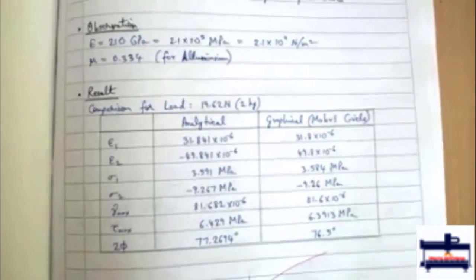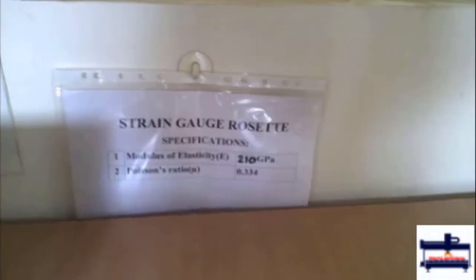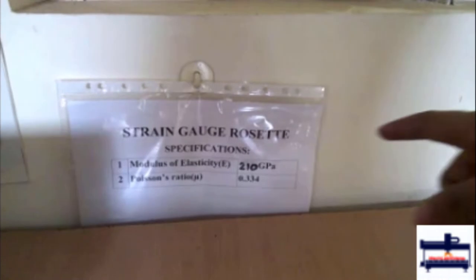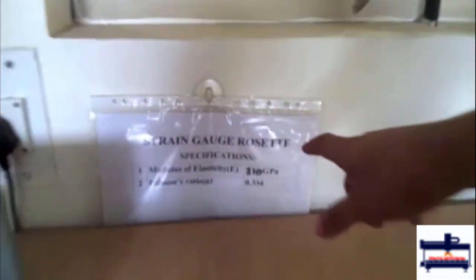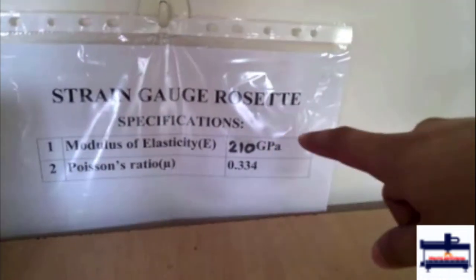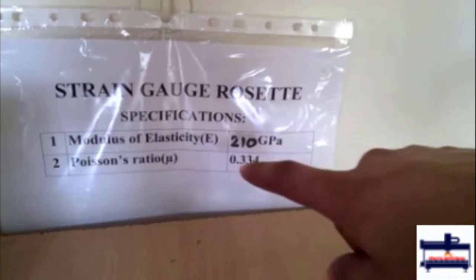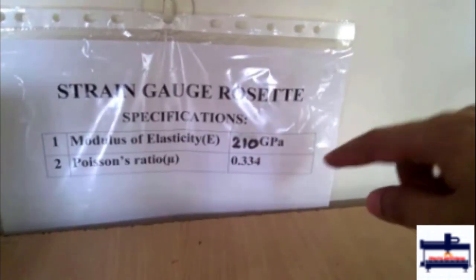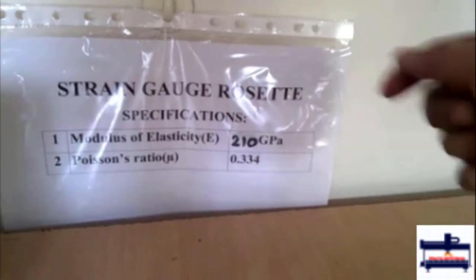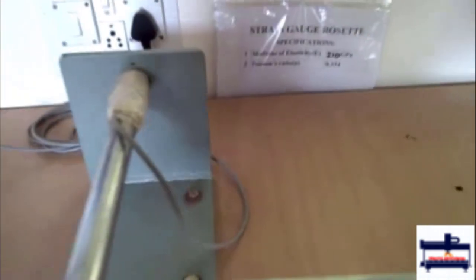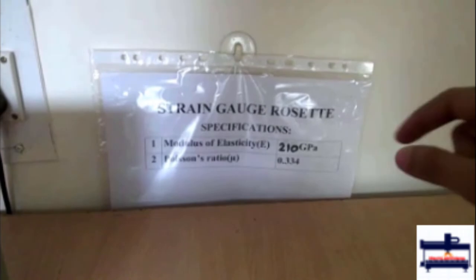And then we draw this table for comparison of analytical and experimental. So this is the specification for this experiment and the modulus of elasticity is 210 GPa for mild steel and Poisson's ratio is 0.334 for aluminum. We are supposed to use the Poisson's ratio value as 0.3 because here it is mild steel.